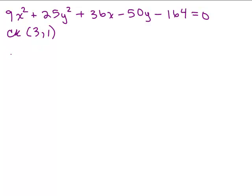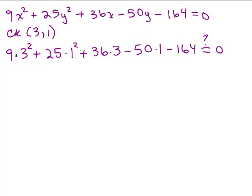So we're going to plug in 3 for x, so we have 9 times, actually I don't need a parenthesis, 9 times I'm going to put in 3 for x. So that's 3² and then for y I'm going to put on a 1, so that's a 1². And then for x I'm going to put a 3, y I'm putting in a 1, minus 164 and the question is, does that equal 0?